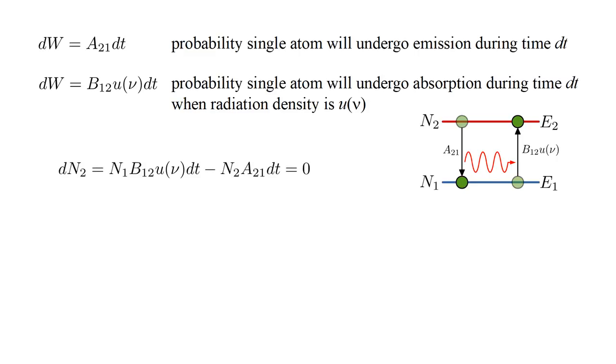In thermal equilibrium, N-one and N-two should remain constant. So, dN-two, the change in N-two during a time dt, should be zero. Absorption increases N-two. The number of absorptions is the number of atoms in state one, which is N-one, times the probability of absorption per atom, B-one-two times u of nu times dt. Emission decreases N-two. The number of emissions is the number of atoms in state two, N-two, times the probability of emission per atom, A-two-one times dt. These two effects must cancel out. And we write the rate of change of N-two with respect to time is zero. We can solve this equation for u of nu to find that the radiation density is N-two over N-one times A-two-one over B-one-two.